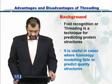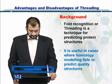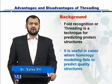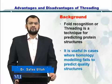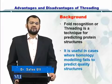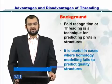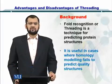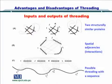Threading is very useful in cases where homology modeling fails — specifically in cases where you have low alignment and identity. This is also known as the twilight zone.